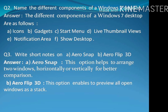Name the different components of a Windows 7 desktop. Answer: The different components of a Windows 7 desktop are as follows. A) Icons, B) Gadgets, C) Start Menu, D) Live Thumbnail Views, E) Notification Area, F) Show Desktop.